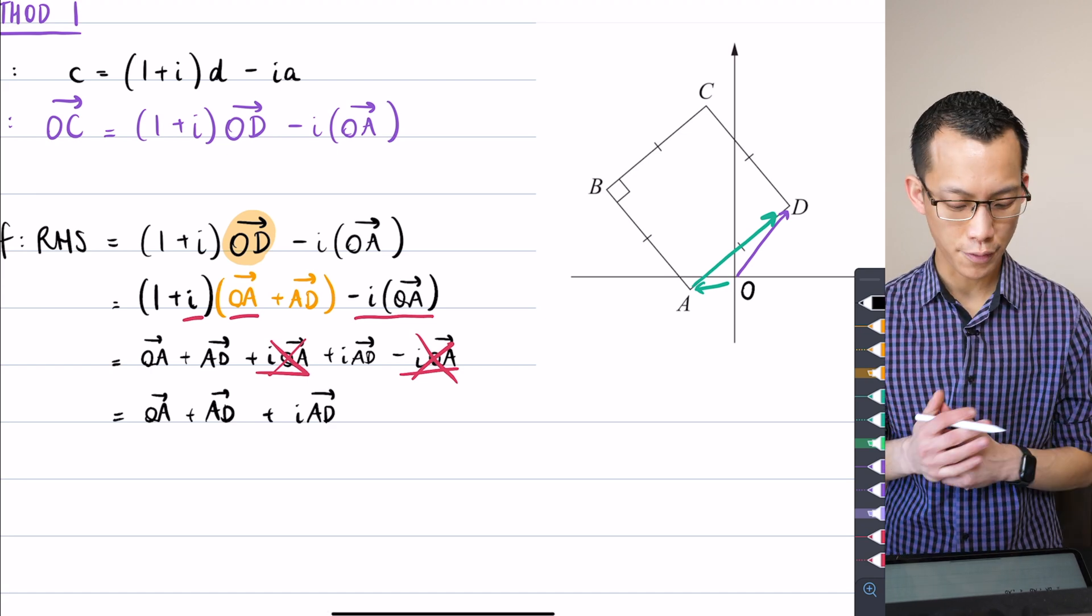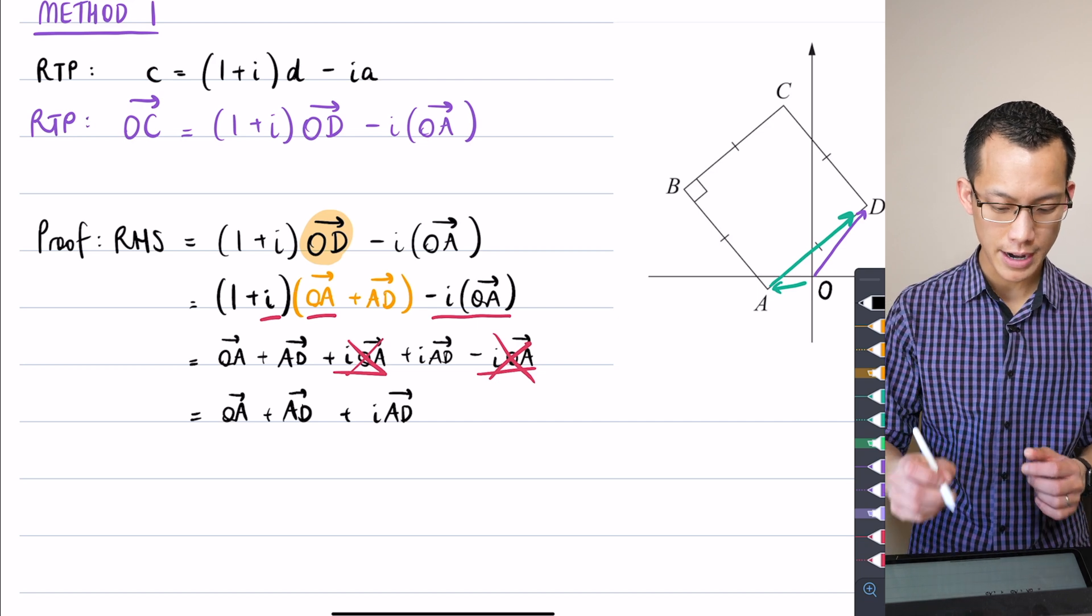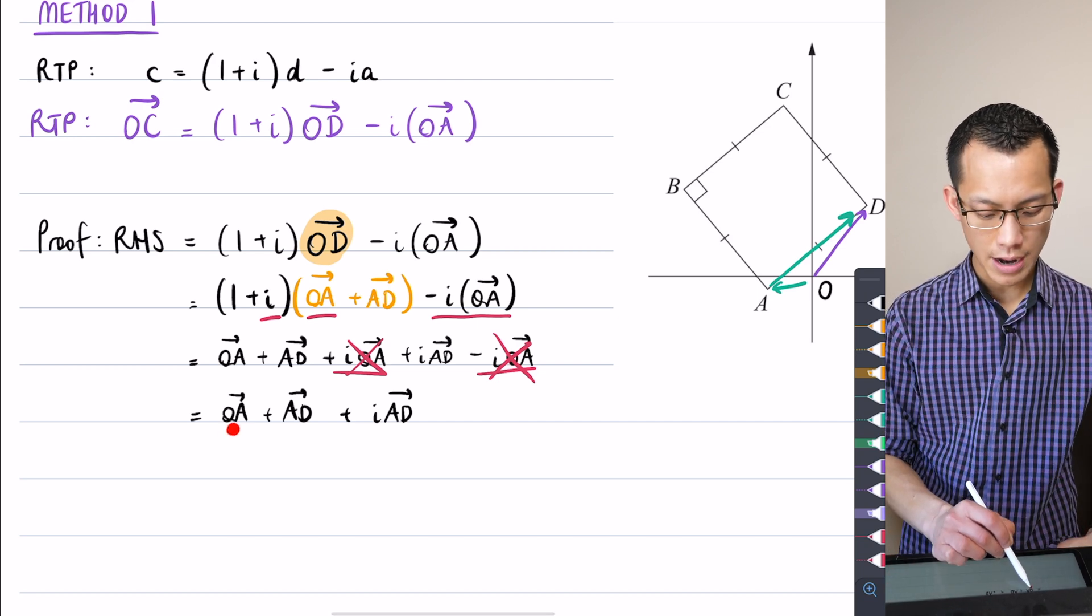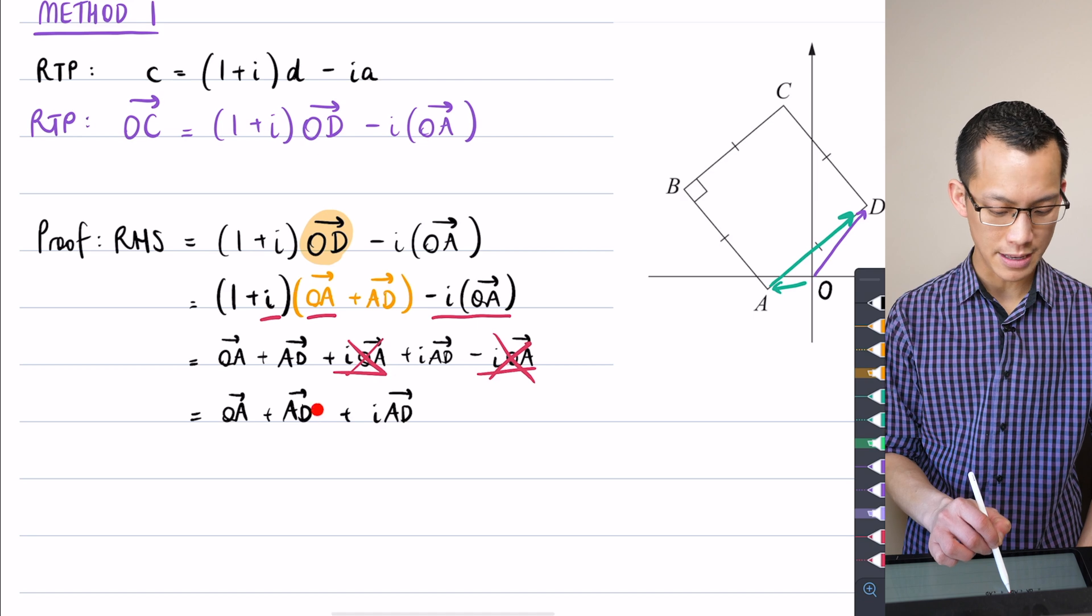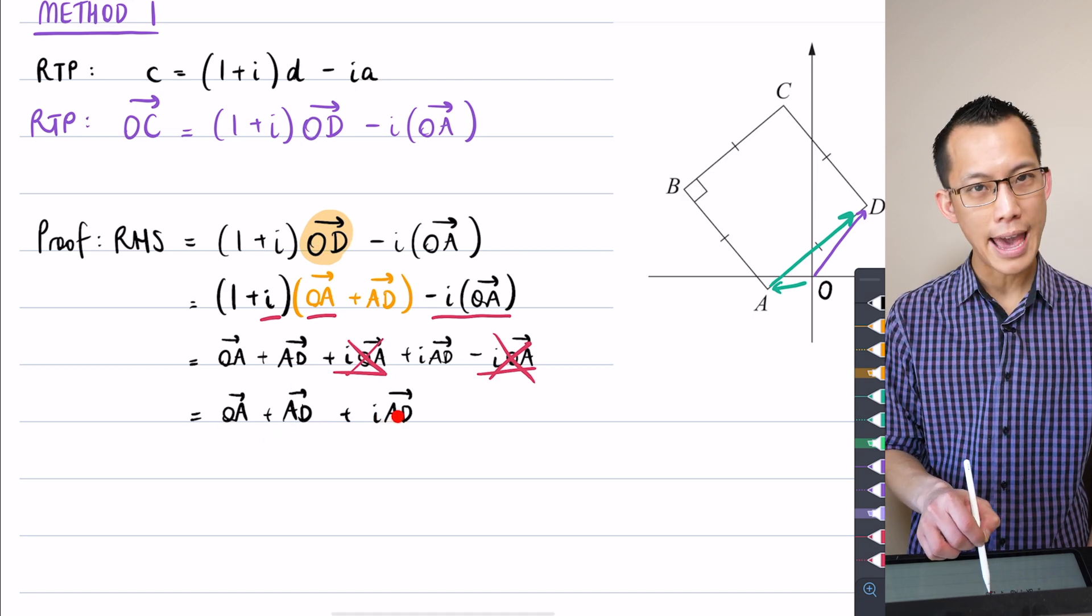So, let's take stock of this for a moment. What have I got here? This is promising, this is progress. You can see here that what I've got is OA plus AD, which is that original OD vector that I mentioned, and then you've got this one hanging out on the end.